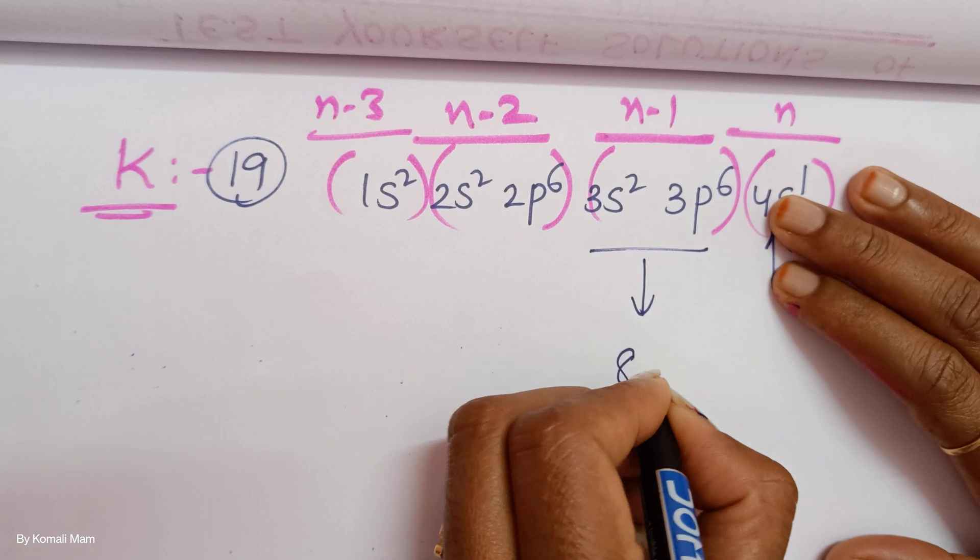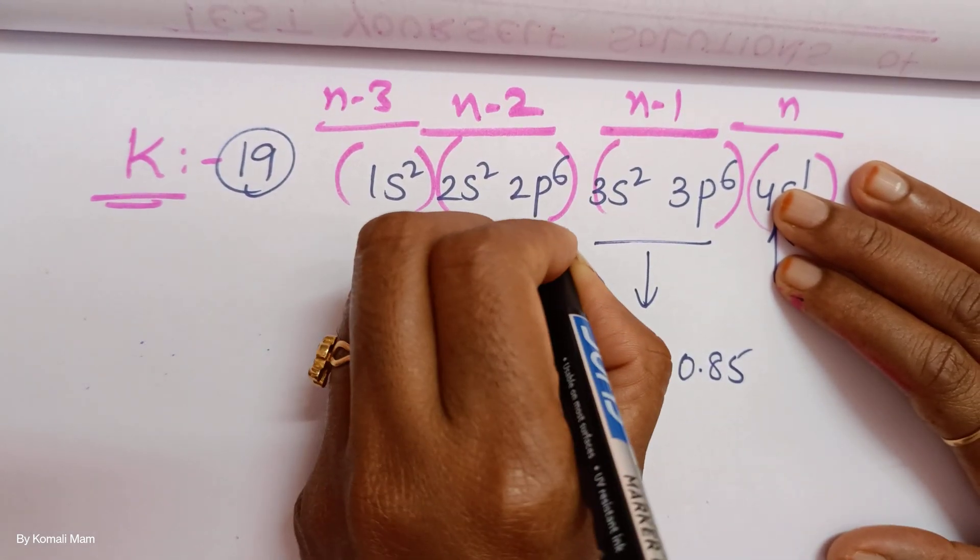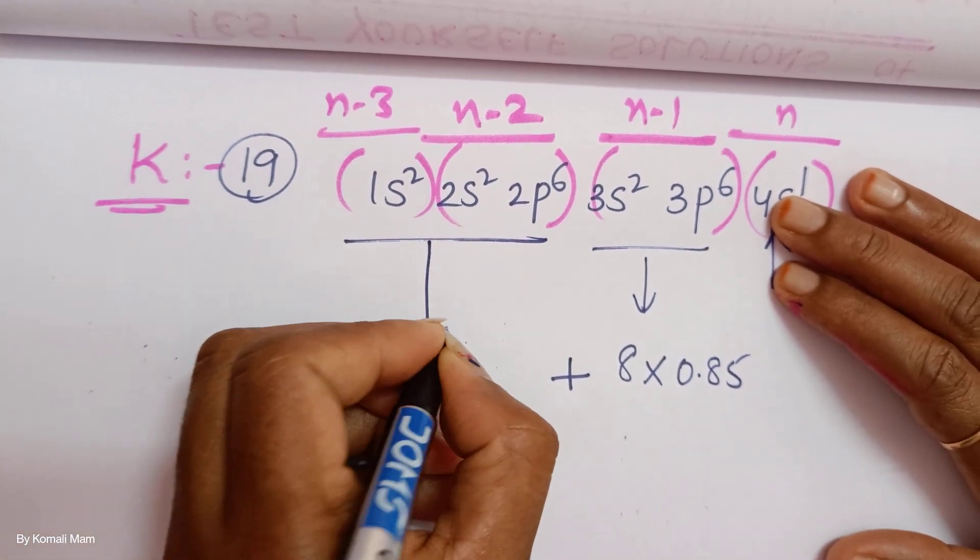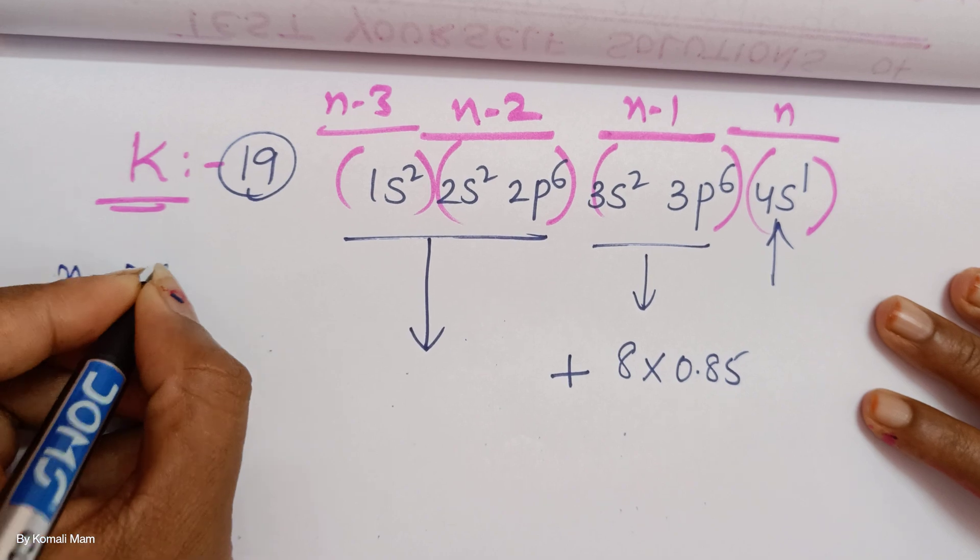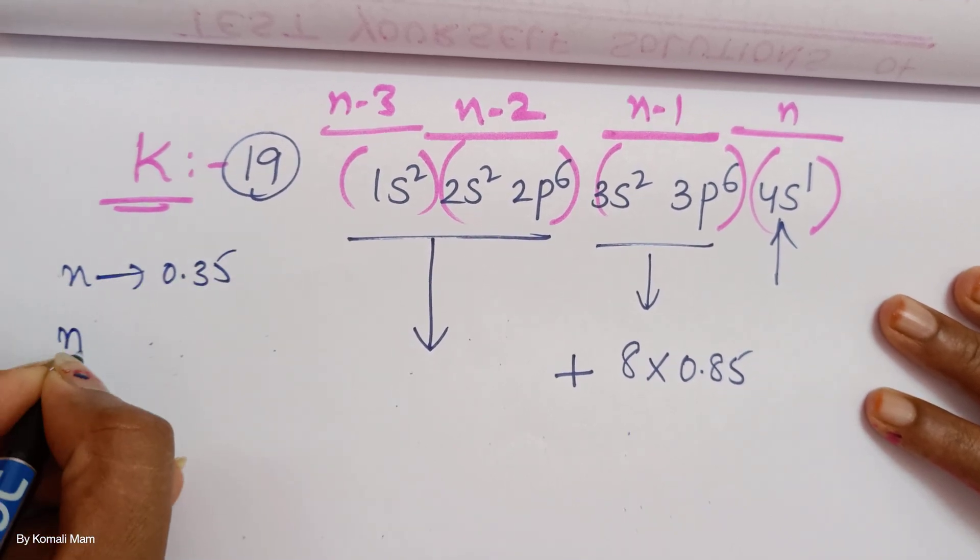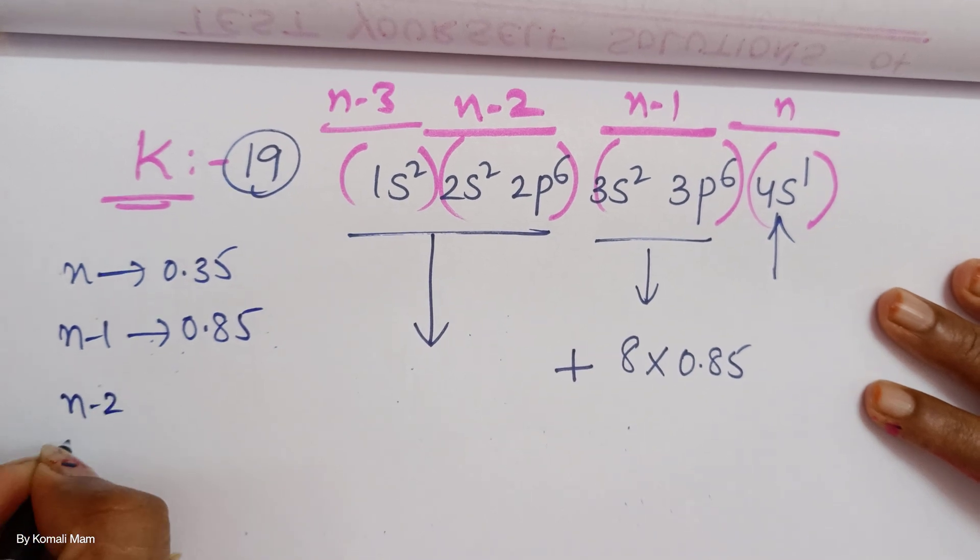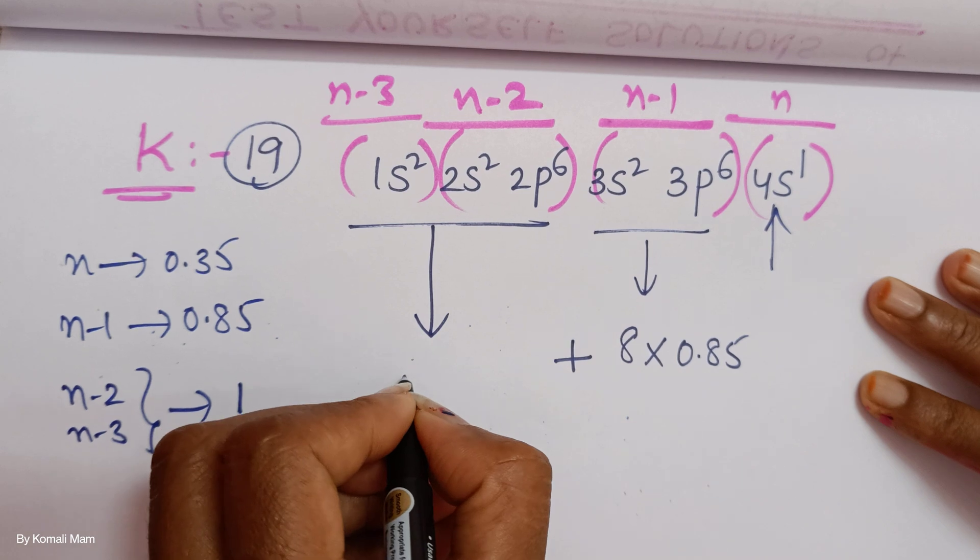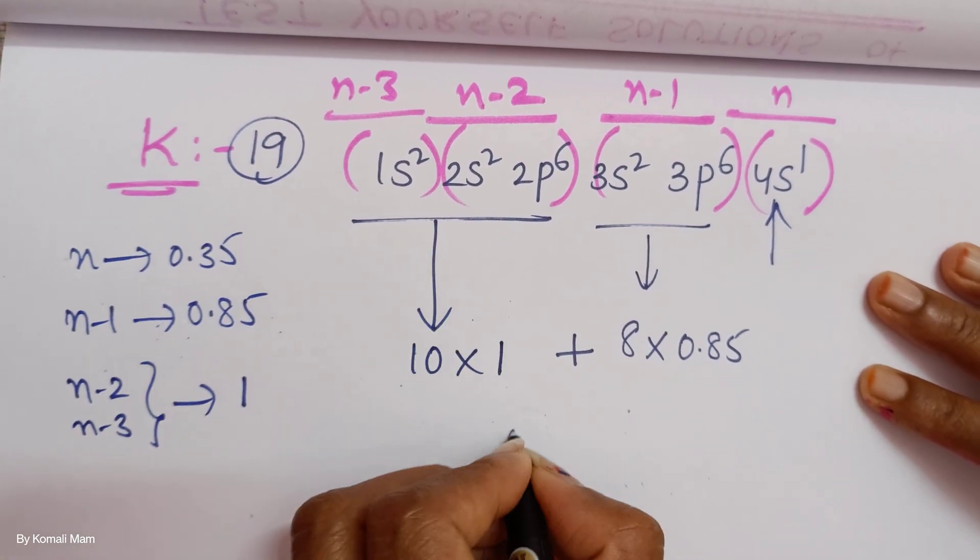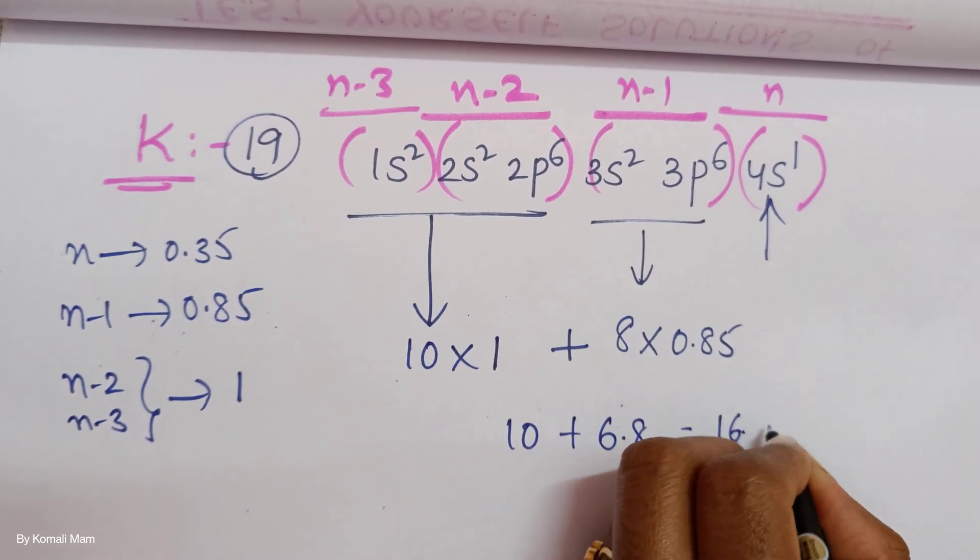You are counting for this electron. Only 1 electron is there. Then here how many electrons are there students? 8 into each one 0.85 plus N minus 2 or N minus 3, total value is only 1. So here total 10 into 1. Then 10 plus 6.8, that is 16.8.